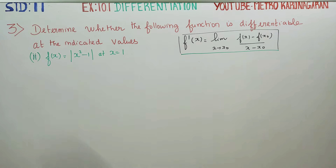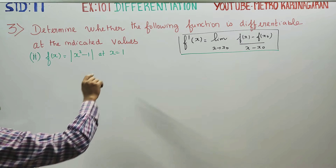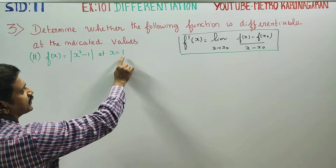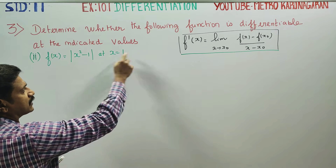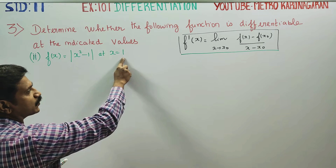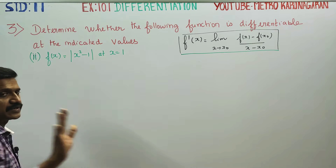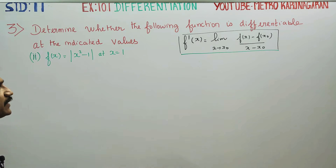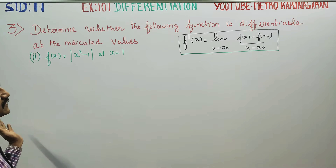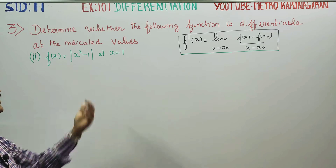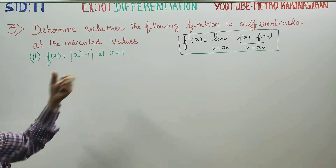To check whether the function is differentiable, we have to find the left-side derivative of 1 and the right-side derivative of 1. Therefore, if the left-side derivative is equal to the right-side derivative, it is differentiable. We need to find both the left and right side derivatives using the formula.